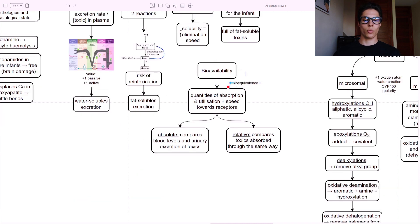Bioavailability - it's the quantities of absorption and utilization, and also the speed towards the receptors. When there is bioequivalence, it is because the absorption and the quantities that reach the receptors are the same. We can have an absolute bioavailability, which compares blood levels and urinary excretion of toxins, and a relative bioavailability, which compares the toxins absorbed through the same way.